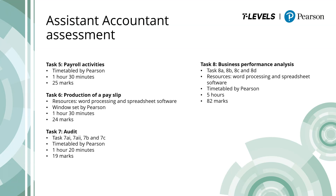Finally, Task 8 is the largest task in the project — 5 hours in duration and worth 82 marks. Students will conduct a business performance analysis using the information provided within the set scenario. The task is split into four parts: 8A — calculate ratios and produce a report; 8B — produce a cash flow forecast, report and updated cash flow forecast; 8C — prepare budgetary information; and 8D — calculate variances and produce a report. Resource documents and answer booklets will be provided, and for some activities students will be required to use spreadsheet and word processing software.